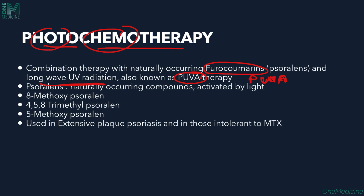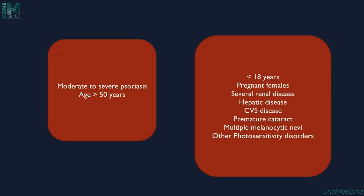Psoralens are naturally occurring compounds activated by light. We have 8-methoxypsoralen, 4,5,8-trimethoxypsoralen, and 5-methoxypsoralen — the first two are natural, while 4,5,8-trimethoxypsoralen is synthetic. PUVA is used in extensive plaque psoriasis and in those intolerant to methotrexate, i.e., moderate to severe psoriasis, in patients above 50 years of age.